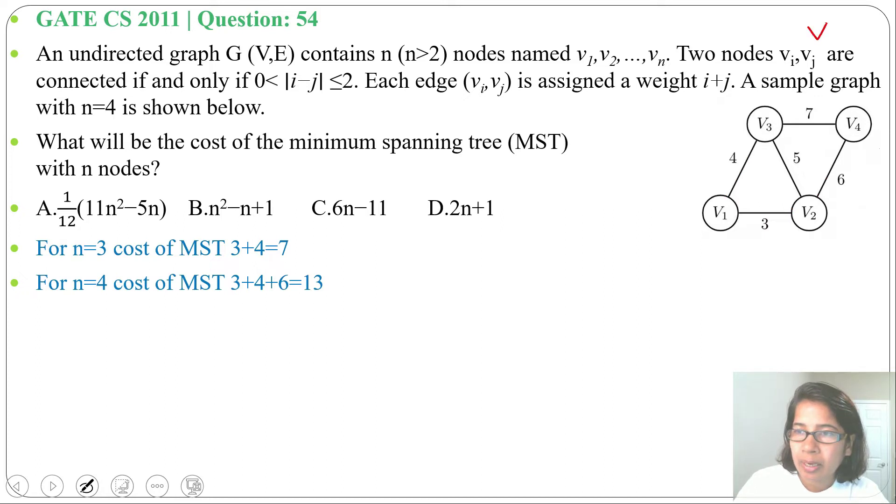Suppose n=5, let me take another vertex V5. Then V3-V5 will be connected as difference is 2 and weight will be 5+3=8. V5-V4 will be connected, difference is 1 and weight will be 9. V5-V1 will not be connected, V5-V2 will not be connected. Now in minimum spanning tree we'll consider V1-V2, V1-V3, then skip 5, include V2-V4=6, skip 7, then include V3-V5. So cost is 3+4+6+8=21.